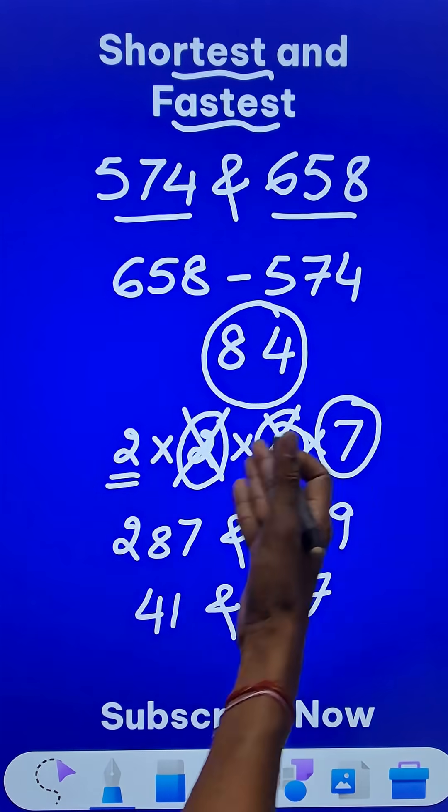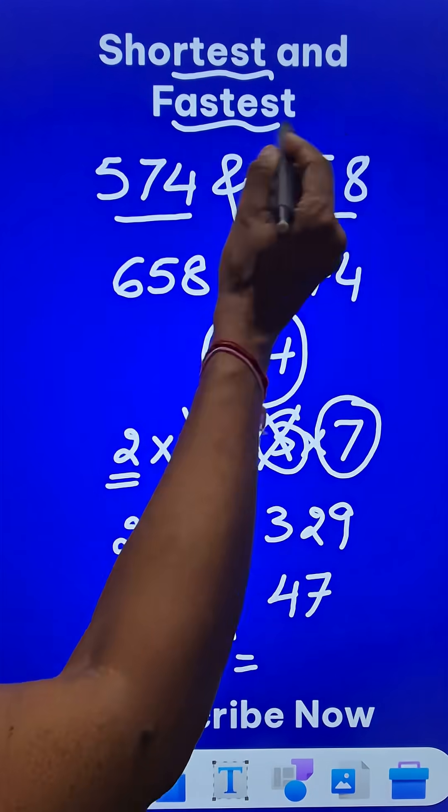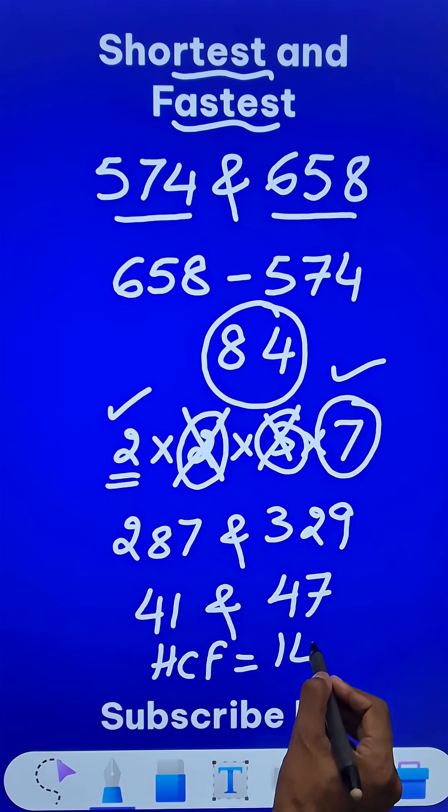There are no other factors and therefore the highest common factor of these two numbers is 2 times 7, that is 14.